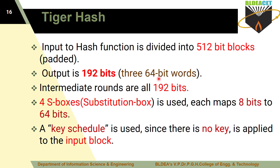For this Tiger Hash function, the output is a fixed 192 bits, which is in the form of three 64-bit words. The Tiger Hash function consists of 24 rounds, and from each round you get an output called the intermediate round output, which is also of size 192 bits. Tiger Hash also consists of four S-boxes (substitution boxes), and each maps 8 bits to 64 bits. A key schedule algorithm is used, so no external key is required — the key is generated with the help of this key schedule algorithm and applied to the input block.